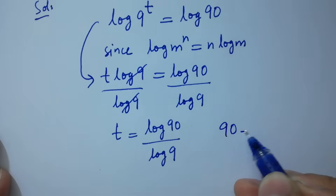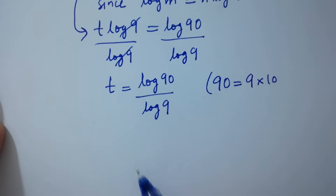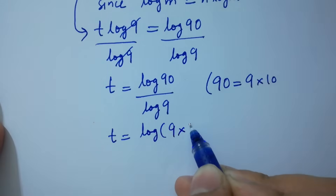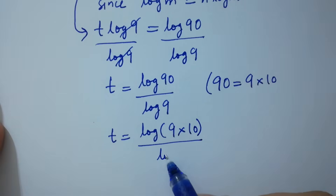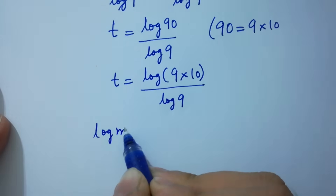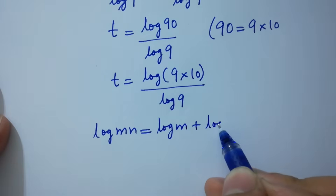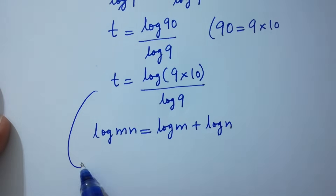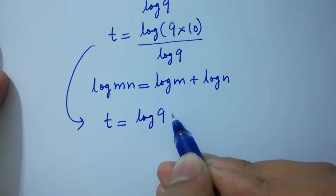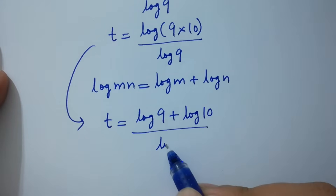Since 90 equals 9 times 10, t equals log of 9 times 10 over log 9. Using the rule log(mn) equals log m plus log n, t equals log 9 plus log 10 over log 9.